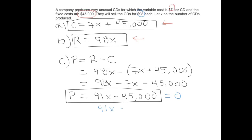So 91X equals 45,000, and then you get an answer for X. I'm going to go ahead and let you finish from here.